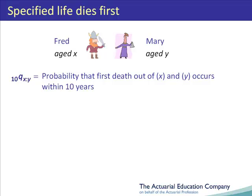Now let's change this probability by writing a number 1 directly above Mary's status symbol Y. How does this change the probability? Well, it is still the probability of the first death occurring within 10 years, but it now stipulates an additional condition: that the first death has to be Mary.